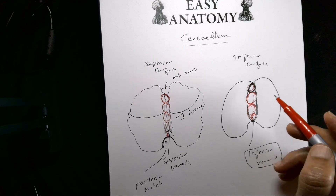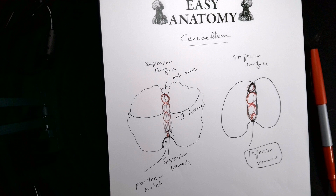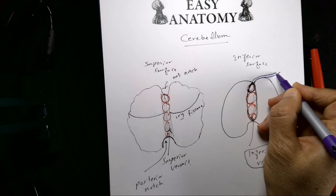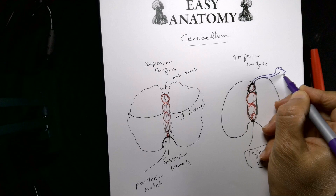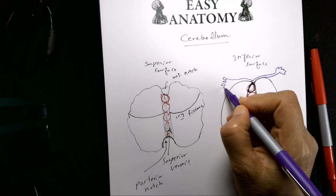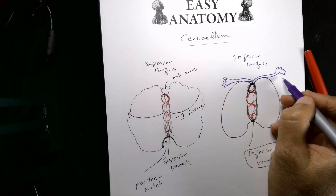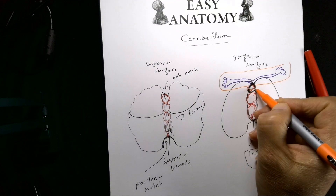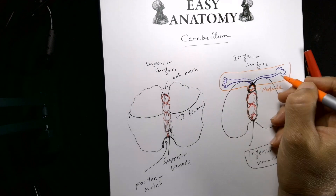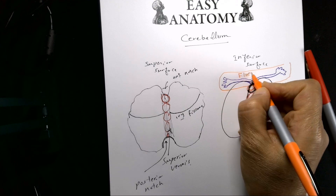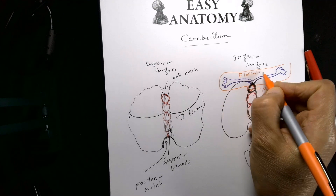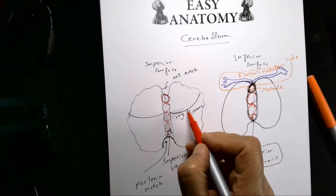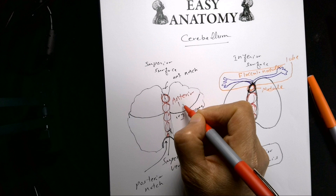From the nodule there is another part extending like an arm on each side, ending with a hand-like structure. Together, this forms what we call the flocculonodular lobe — because this is the nodule, and this part is the flocculus.